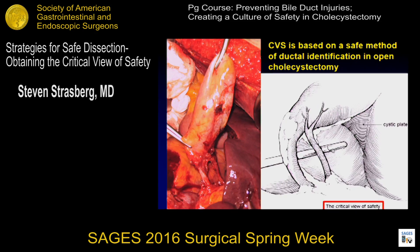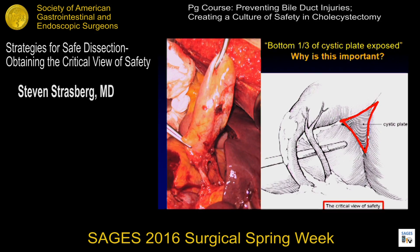The critical view of safety is based on the method of ductal identification used in open cholecystectomy, in which we identified putatively cystic structures, then took the whole gallbladder off the cystic plate, and there are only two structures going in — that's secure identification. Laparoscopically we don't take the whole gallbladder off, but it's very important to demonstrate this portion of the cystic plate. When you get to the critical view, it should be secure in your mind that there's nothing left to do except take the rest of the gallbladder off the cystic plate. If there are other things you have to do, you've not reached the critical view.